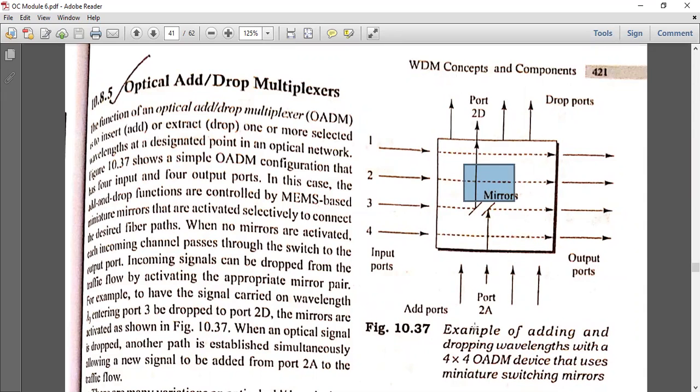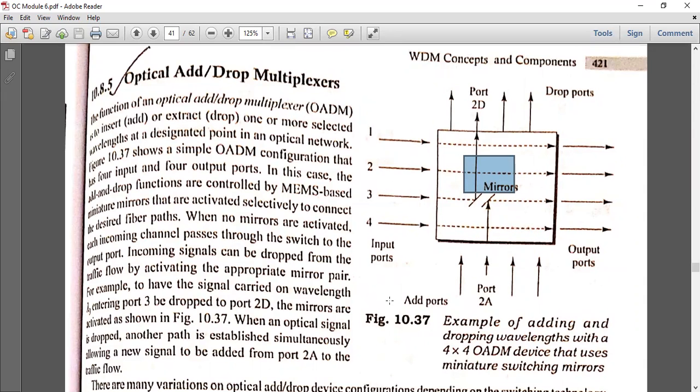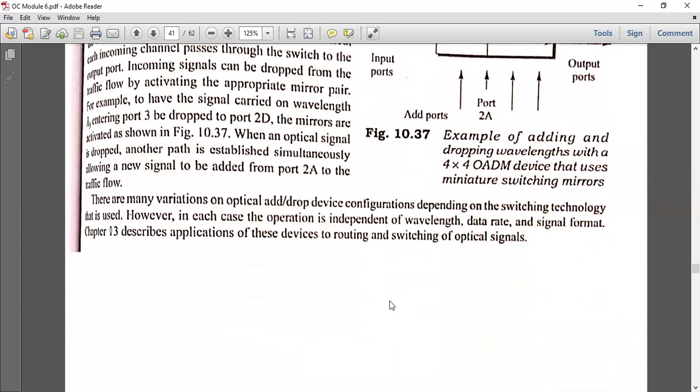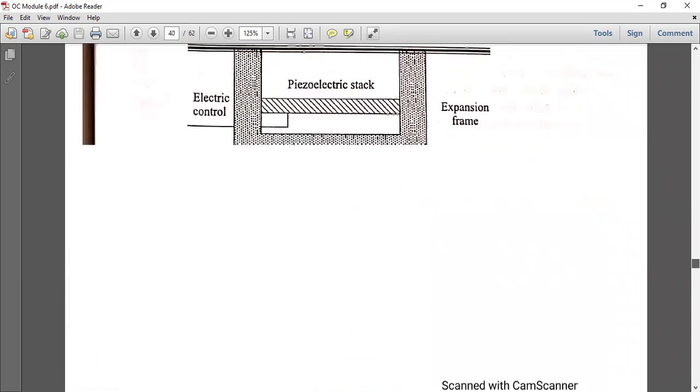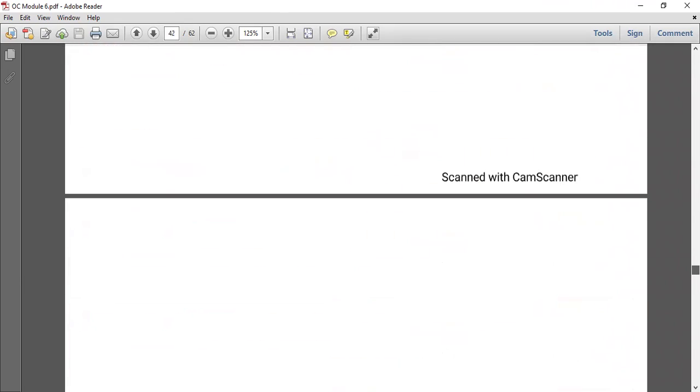The corresponding add and drop configuration allows you to drop a wavelength and add a new wavelength using a newly created path. This is the optical add or drop multiplexer mechanism. It is independent of wavelength, data rate, signal format, etc. The add and drop of a particular wavelength can be selected independently.